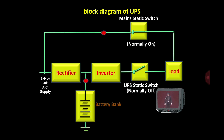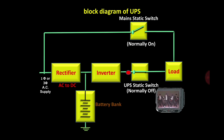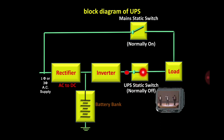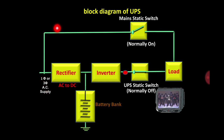Now, if for any reason the main supply is not available, the main static switch gets open and the UPS static switch gets closed. The moment the main supply is not available, the UPS static switch closes and the main static switch opens. The load is still receiving supply — now through the inverter. The battery provides DC, and the inverter converts that DC into AC, so the load gets continuous supply even when the main supply is not available.